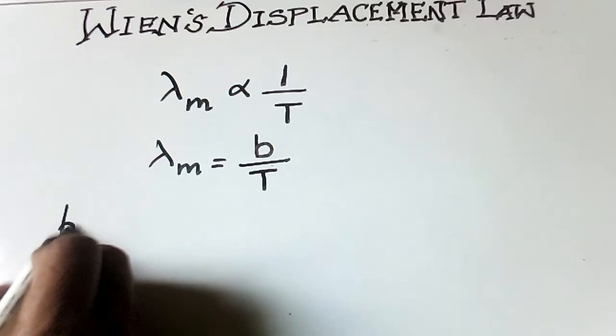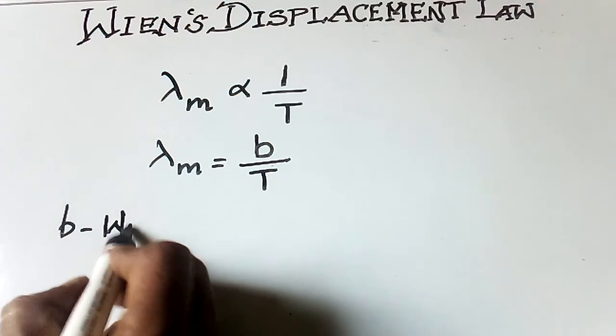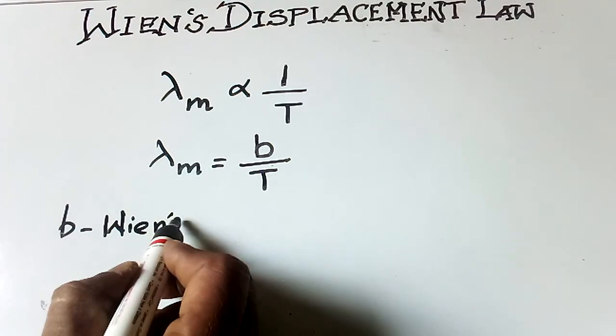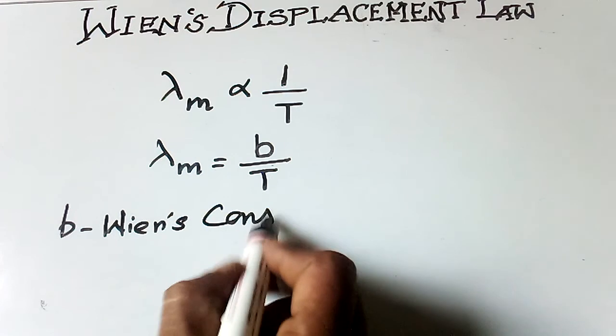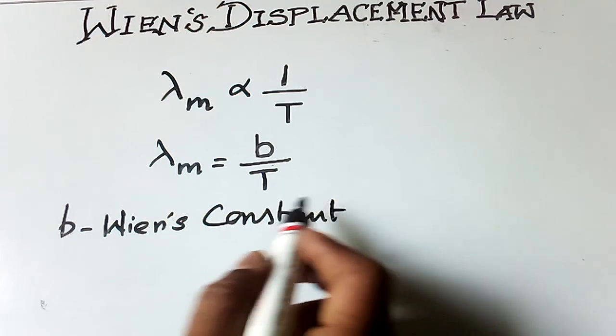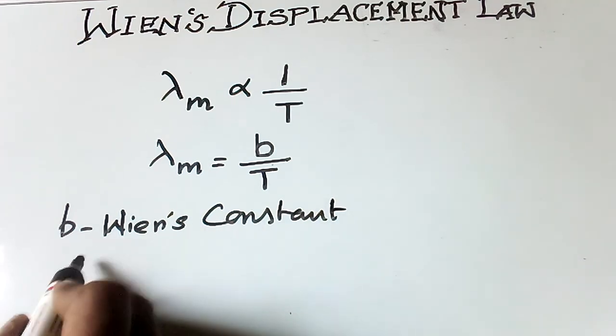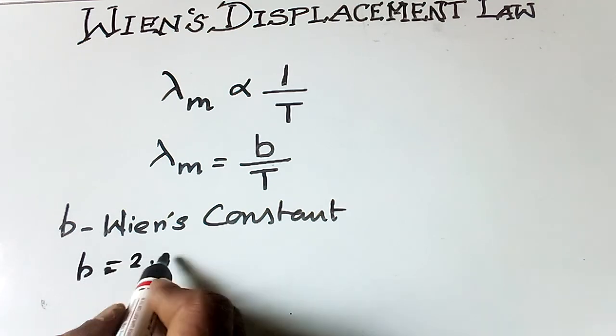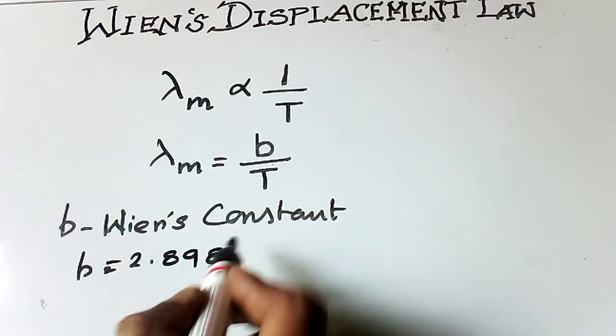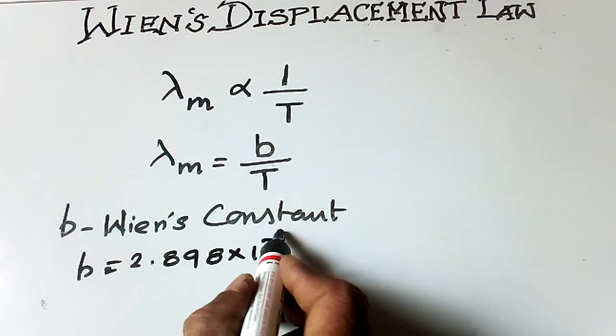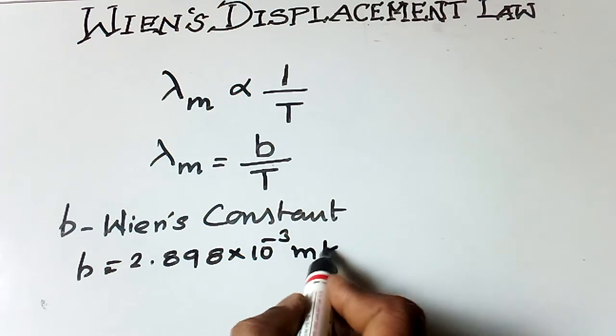Where b is known as Wien's constant. Its value is 2.898 into 10 to the power minus 3 meter kelvin.